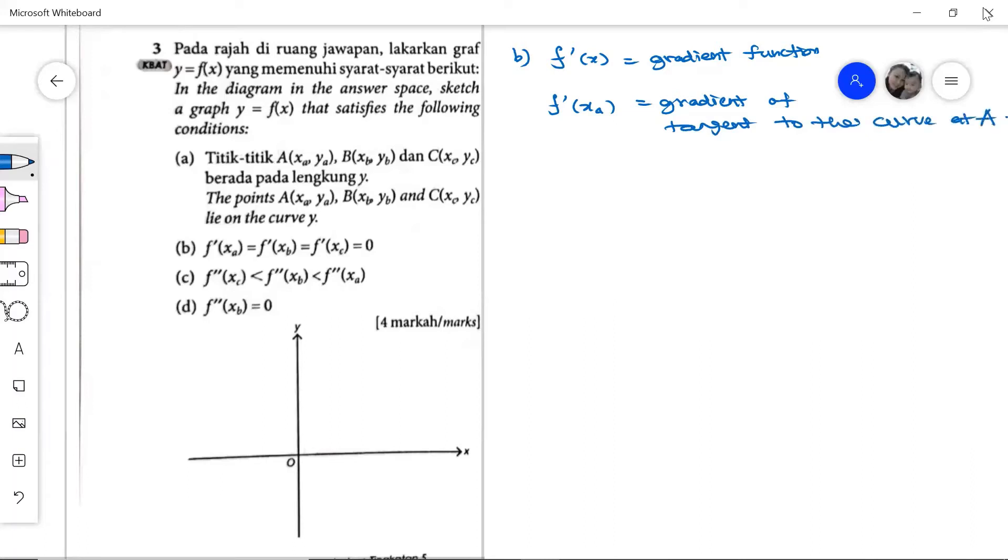Now so we know that the gradient of tangent at point a equals to the gradient of tangent at point b, equivalent to the gradient of tangent at point c. They are all zero, which means the point a, b, c, they are the turning points.